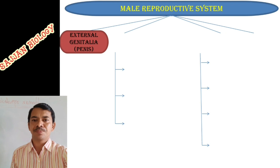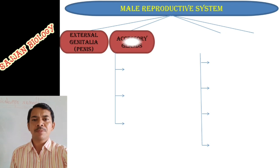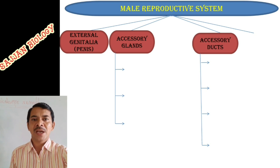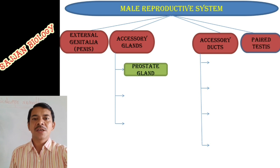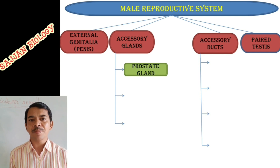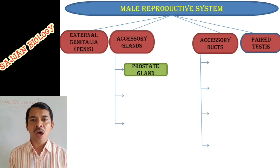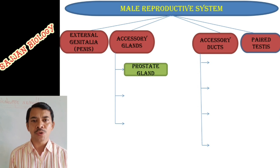The human male reproductive system consists of external genitalia called the penis, accessory glands, accessory ducts, and a pair of testes. The external genitalia — the penis — is a copulatory organ which is made of special spongy tissues called corpora cavernosum and corpus spongiosum, which are two important tissues present in the penis.